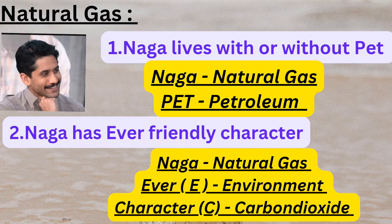For natural gas, I've used an image of actor Naga Chaitanya to create a shortcut. The first shortcut is: 'Naga lives with or without pet.' Here, 'Naga' stands for natural gas and 'pet' stands for petroleum — meaning natural gas is found in association with or without petroleum.